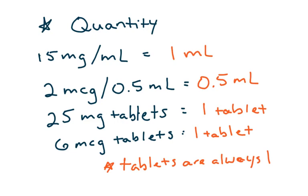For the ones that are tablets, those are the ones people struggle with. So, if it says 25 milligram tablets, then that means you have one tablet. That means that there's 25 milligrams in one tablet. The same with 6 microgram tablets. That means that there are 6 micrograms in one tablet. So, tablets are always your one.